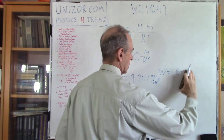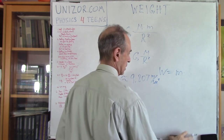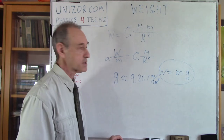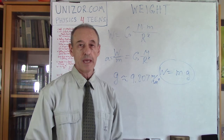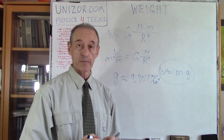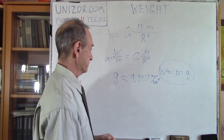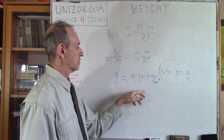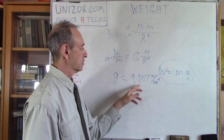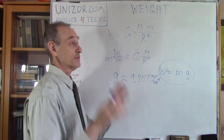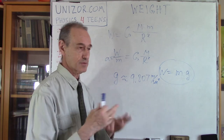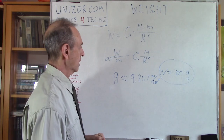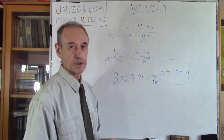Traditionally, the acceleration of free-fall on Earth is symbolized by the letter g, and it's approximately 9.807 meters per second squared. The weight on planet Earth of an object of mass lowercase m is m times g. This is usually abbreviated to 9.8, or even 10 sometimes, just to make things more rounded. But 9.8 would be a good approximation.